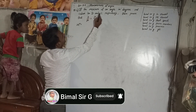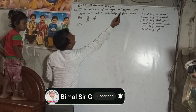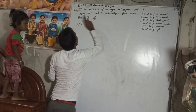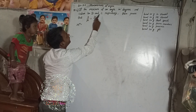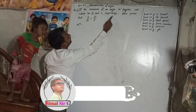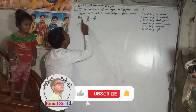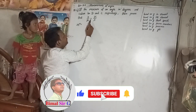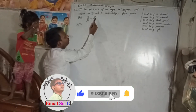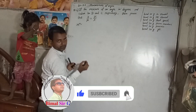If the measure of an angle in degree and radian be D and C respectively, then prove that D by 90 is equal to 2C by Pi.